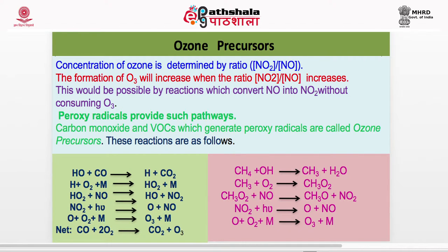Likewise, methane — again a pollutant, as you will study in the greenhouse effect — is removed by reaction with the hydroxyl radical. OH abstracts a hydrogen atom from methane, forming CH3 and water. CH3 reacts with O2 to form CH3O2, and CH3O2 reacts with NO to form CH3O. Remember, CH3O2 is methyl peroxide — it is an oxidizing agent. It oxidizes NO into NO2, so this radical also helps in increasing the ratio NO2/NO. So methane is again an ozone precursor.